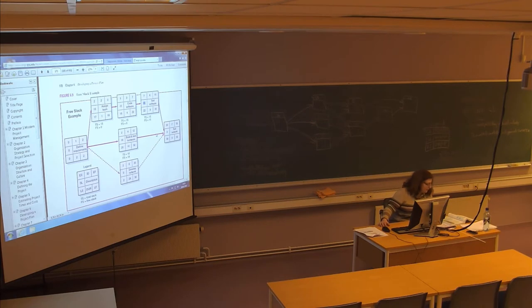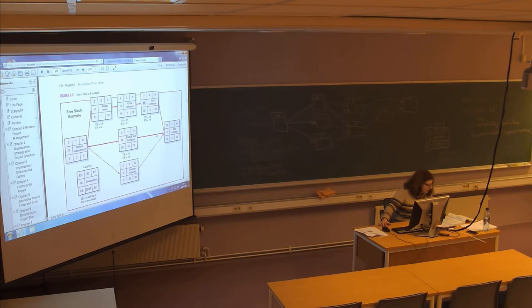The sixth edition uses a different picture — it's figure 6.8 on page 173 — but it shows the same concept. They have one example in the non-critical path where you have a total slack of 35 and a free slack of 35. That's the key point on this topic.